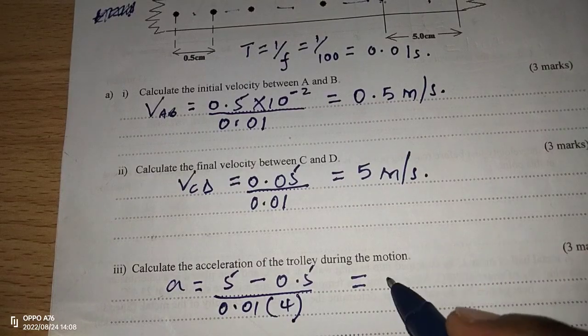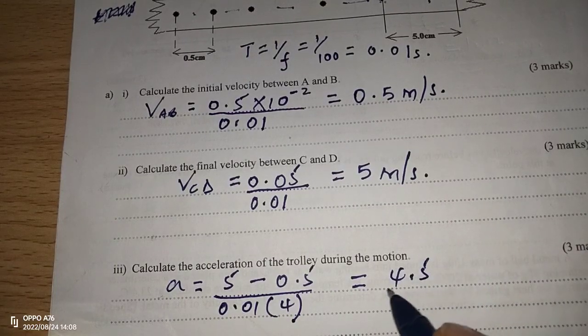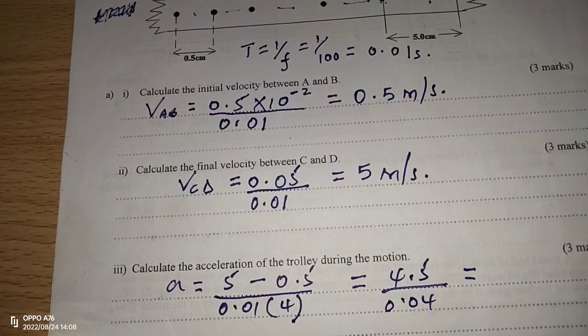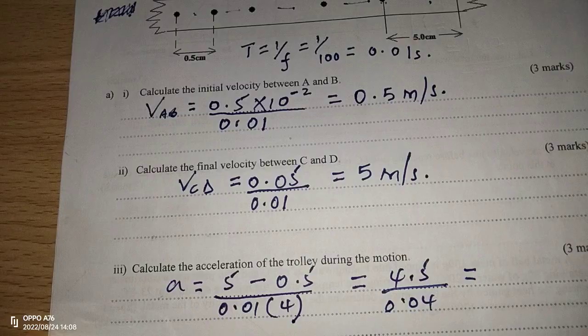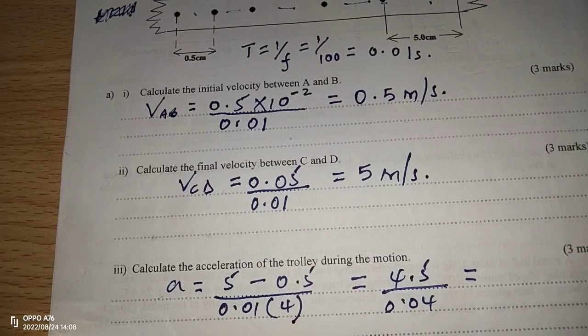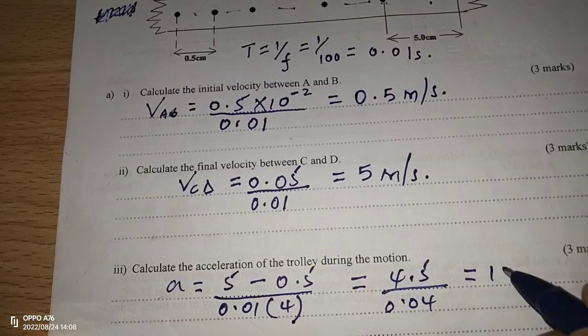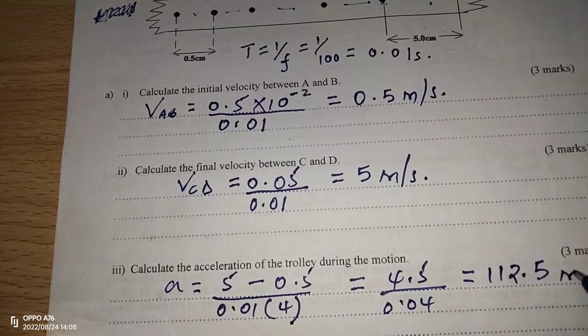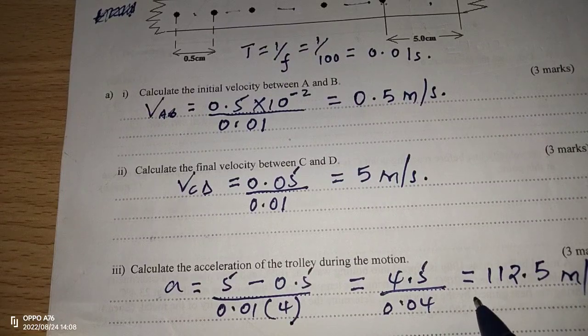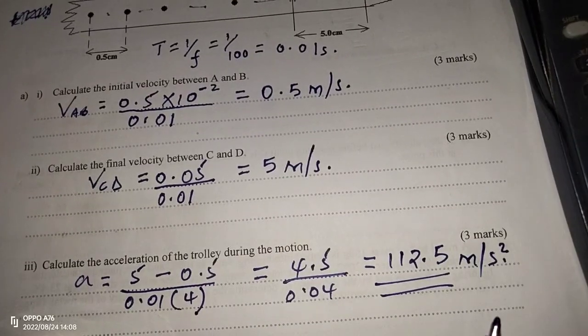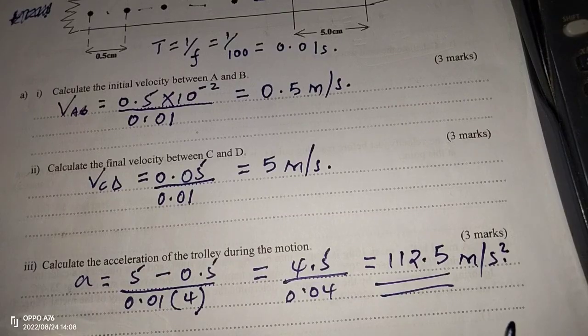So, this is going to give us 4.5, then we divide by 0.04. Now, when we take 4.5 and divide by 0.04, this is going to give us 112.5 meters per second squared, because this is acceleration now.